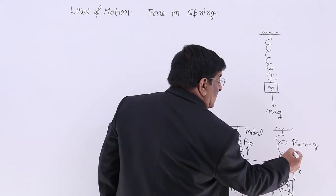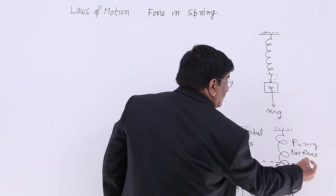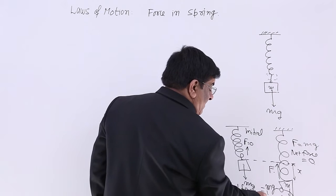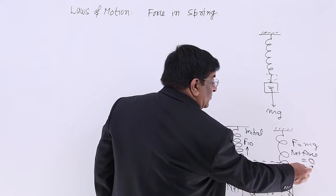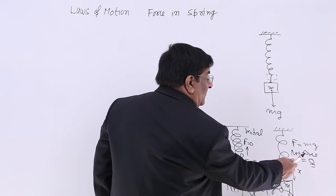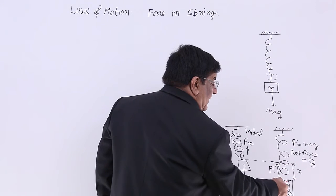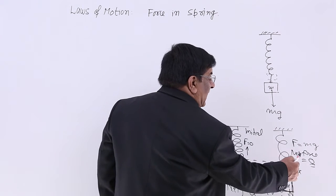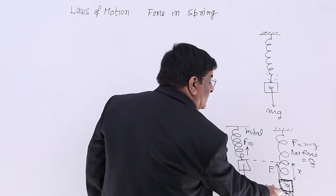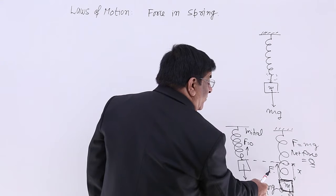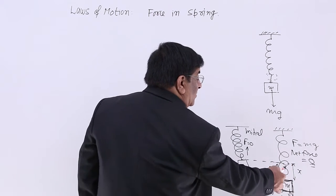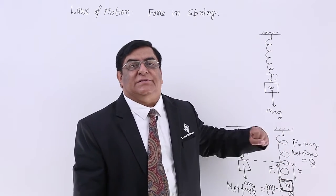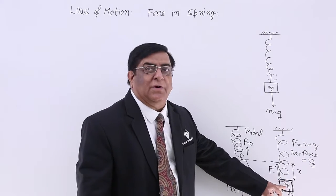When the spring force equals mg, the net force becomes zero. If net force is zero, the mass will not move any further — it stops. It has stopped because the net force has become zero, and the force developed inside the spring is now equal to mg. If mg is a heavier mass, it will go a little further down and again stop. This is balanced and unbalanced force.